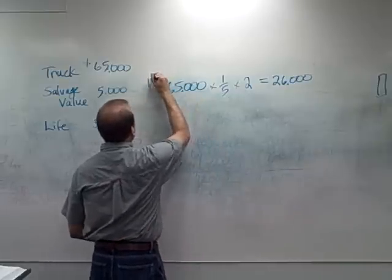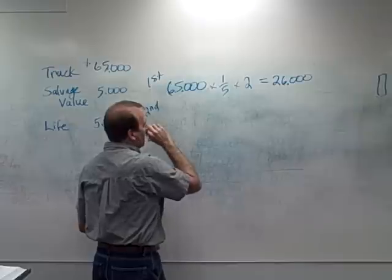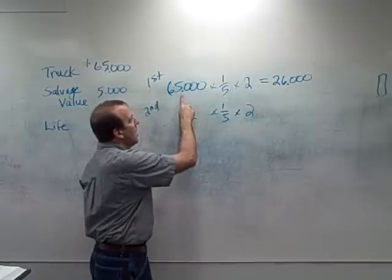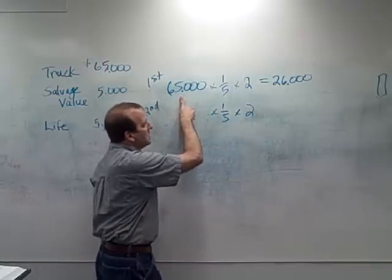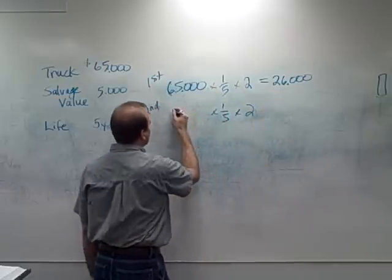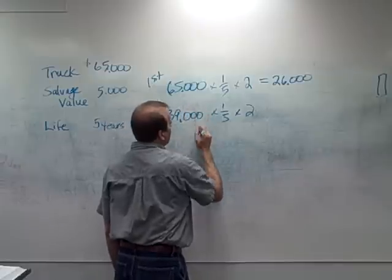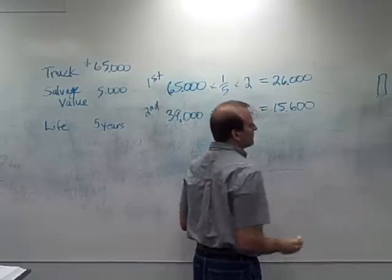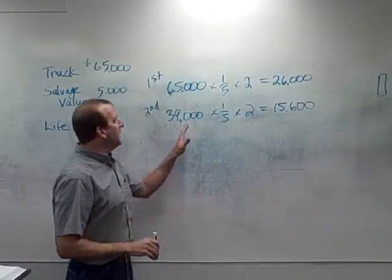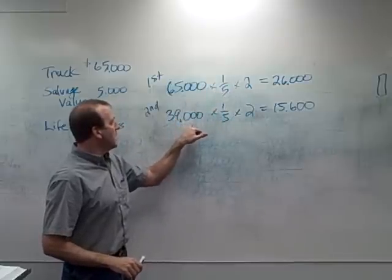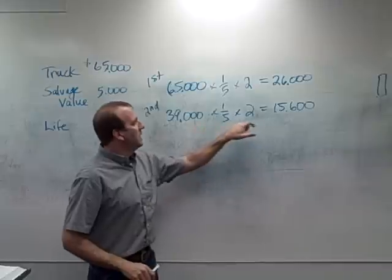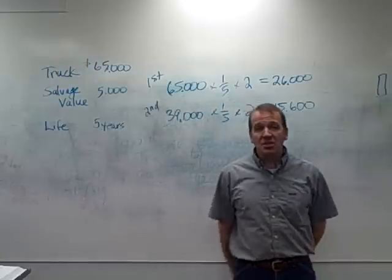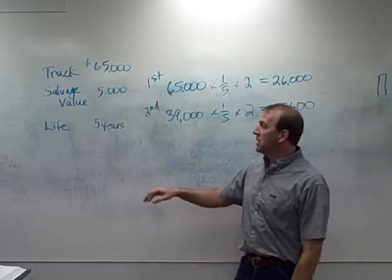In the second year, we use the same 40% rate, but we don't apply it to $65,000 anymore. We subtract the accumulated depreciation of $26,000, leaving $39,000. So $39,000 times 40% gives us $15,600. You keep applying the rate to the remaining book value each year, decreasing the balance each time.